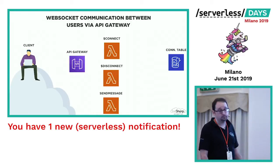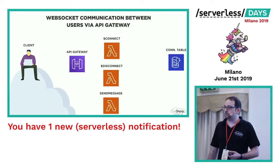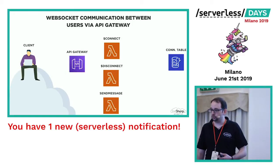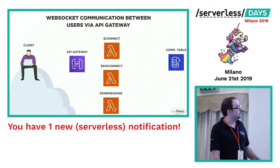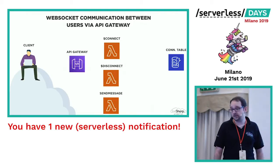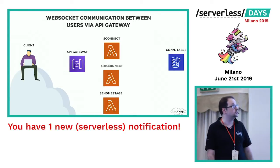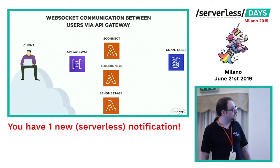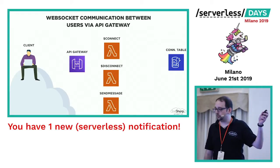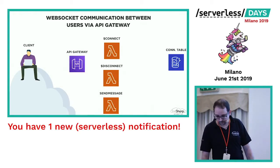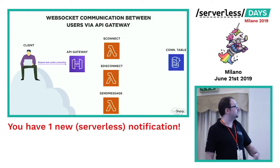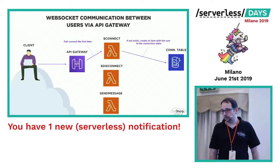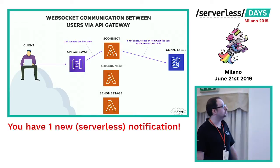The architecture is very simple. We have a client, which can be a simple HTML page. We have API Gateway, already configured to work for WebSocket, with three different routes: connect, disconnect, and send message — the one we created to send the actual message — and the connection table. The connection table is a simple DynamoDB table that contains the connection IDs of all the clients that connect to our WebSocket channel through API Gateway. A client requests a WebSocket connection to API Gateway, then API Gateway calls our routes directly, so it calls connect.